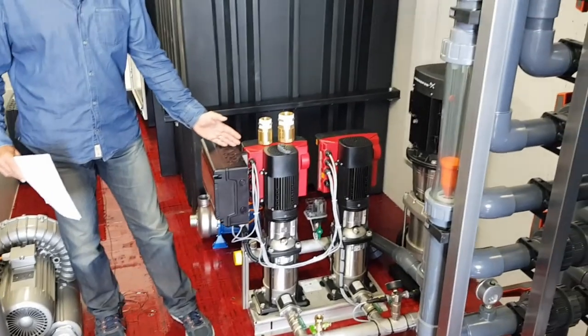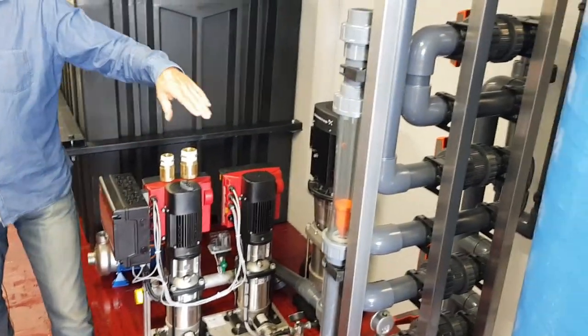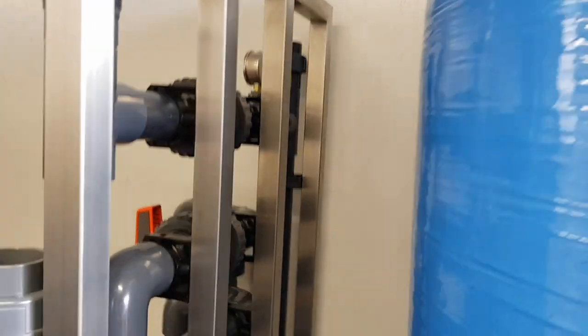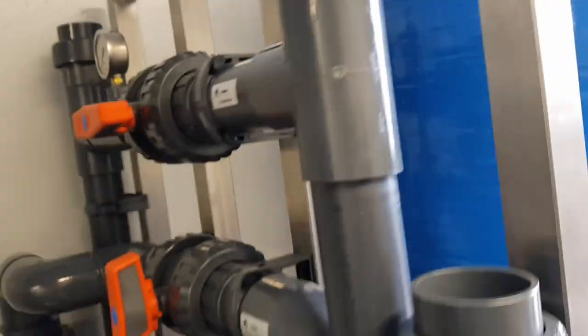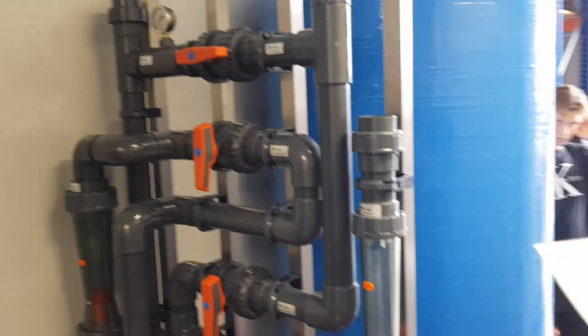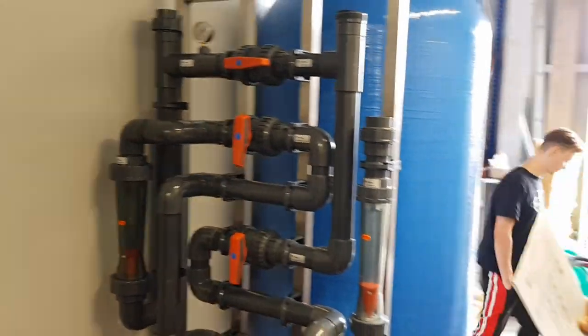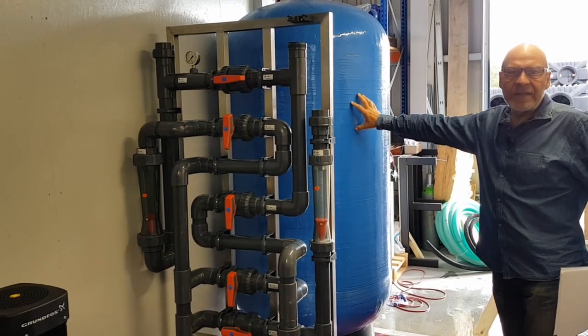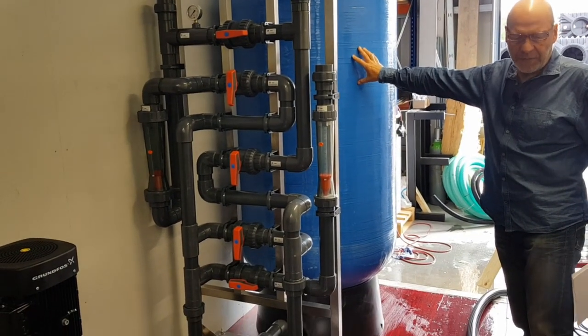On the left side, the booster pumps. The backflushing unit which is here is connected with the sand filter, but for the transport we have to disconnect it now. And this blue vessel is the multi-stage sand anthracite filtration.